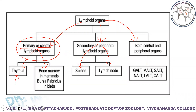The second category of primary lymphoid organs is the bone marrow. In humans and mice, the bone marrow gives rise to both B cells and T cells, but the maturation of T cells occurs in the thymus. The rise and maturation of B cells is totally restricted to the bone marrow. In birds, B cells develop in the Bursa of Fabricius.